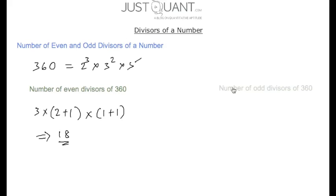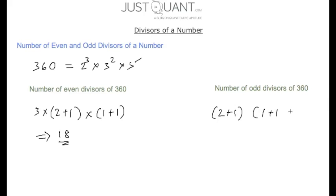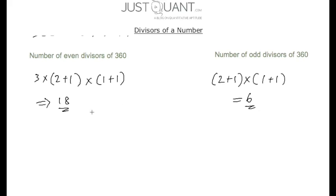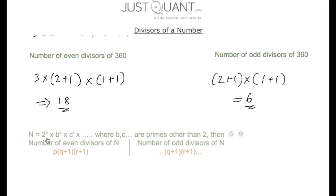Now, the number of odd divisors of 360 is obtained by ignoring the exponent of 2 and incrementing the exponents of other prime factors by 1. That is, incrementing the exponent of 3 by 1 and the exponent of 5 by 1, and calculating the product, we get 6. So this 6 represents the number of odd divisors of 360. In general, if n is a composite number represented as 2 to the power of p into b to the power of q into c to the power of r, and so on.